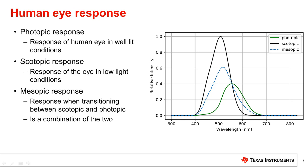In well-lit lighting conditions, the human eye has a response called the photopic response that is characterized by the response of the cone receptors. Scotopic vision is the response in low light conditions due to the rods.